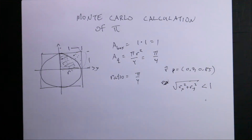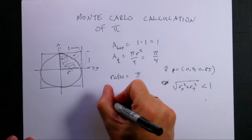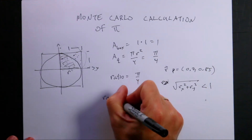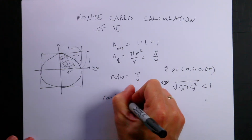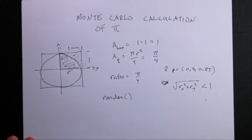In normal Python there are a whole bunch of different options for random numbers. In GlowScript vPython, we only have one — I can say random(), and this returns a number between 0 and 1. I'm going to show you how to use it and then we're going to make our thing.